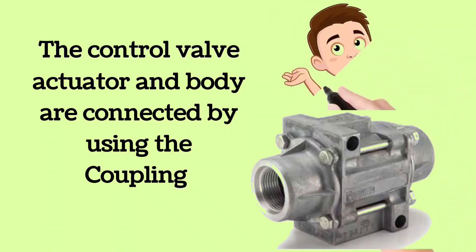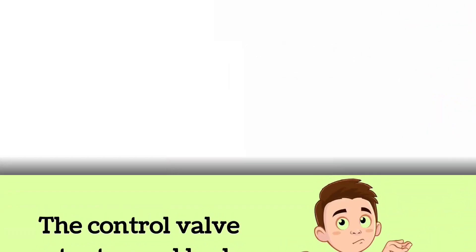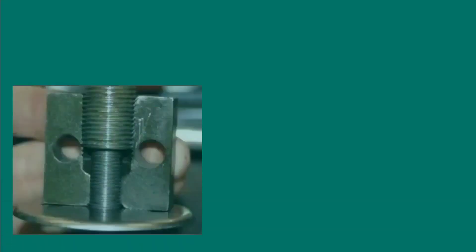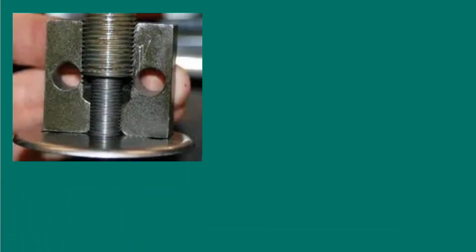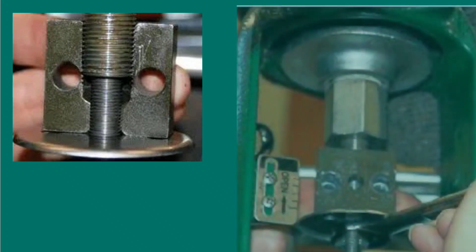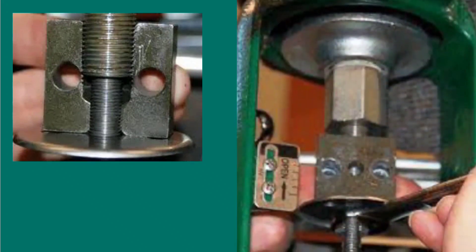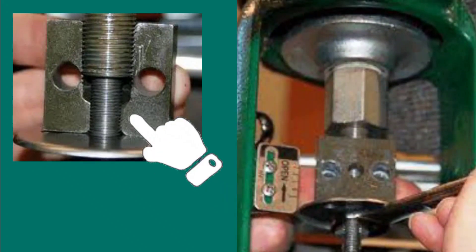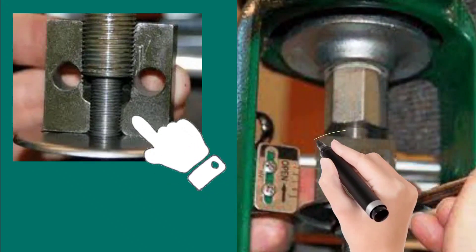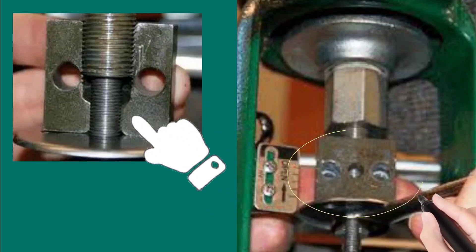Looking more closely at coupling: in the left image you can see the half coupling shown with the arrow, and the full coupling is shown in the right image by the circle.